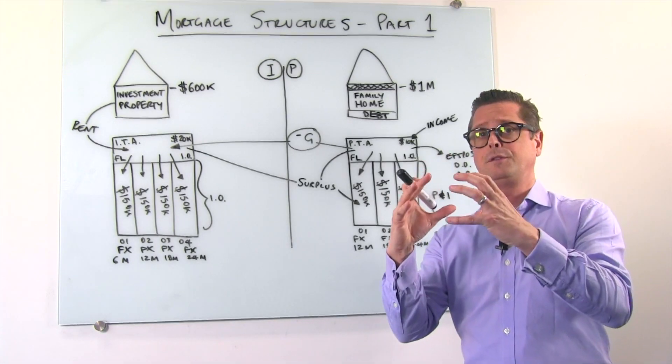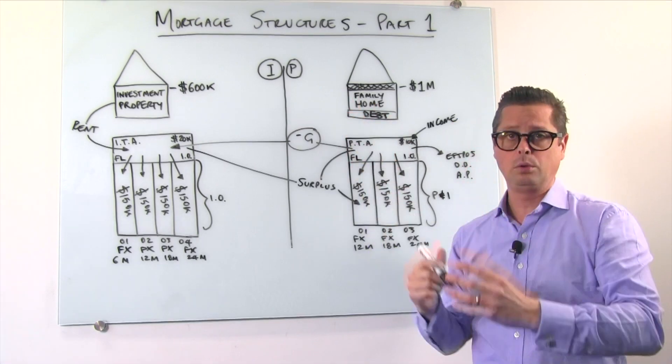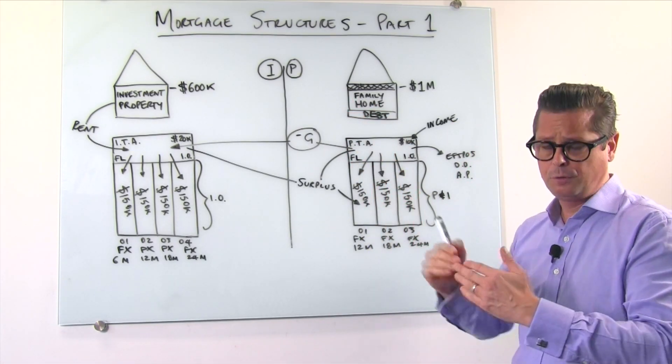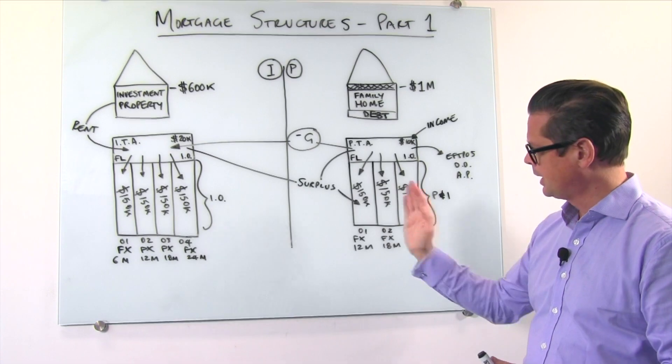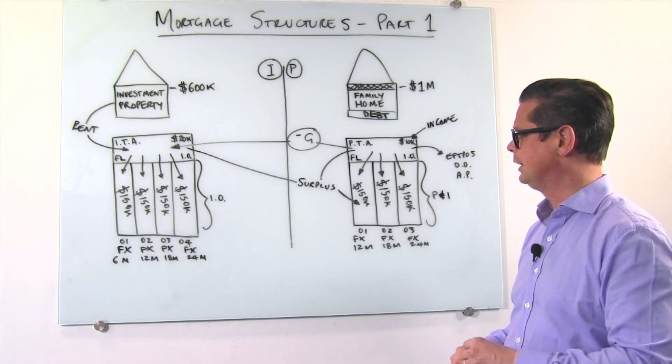So rather than having $450,000 all on one loan and one rate, being at the beck and call of the markets out there, we would hedge our bets, diversify, spread risk and we would put it across different interest rates. Chunk it down into smaller increments like that.